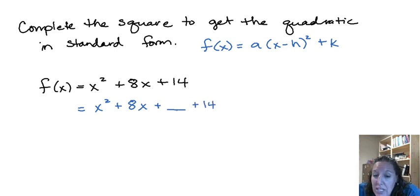Now if I add something I either need to do something to the other side but I can't do that here, or I need to subtract that same value so that we keep everything balanced. And from here it's just completing the square.